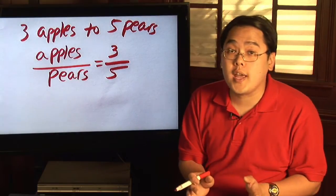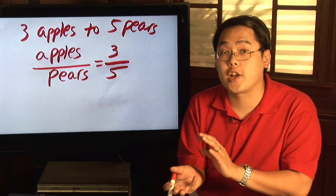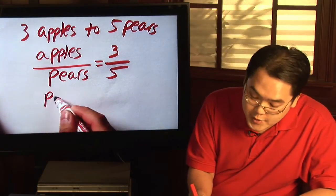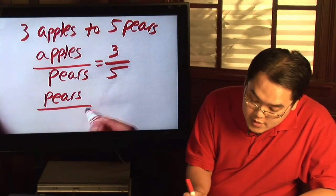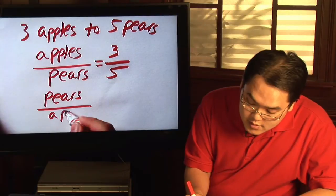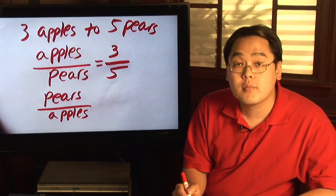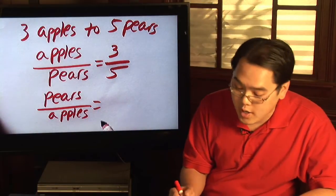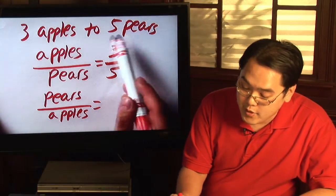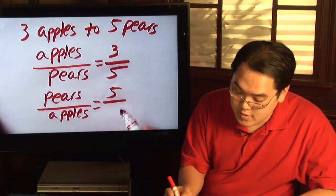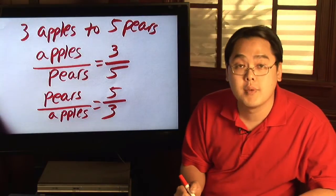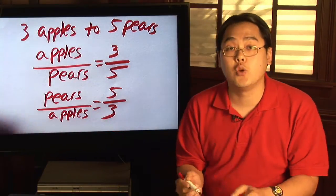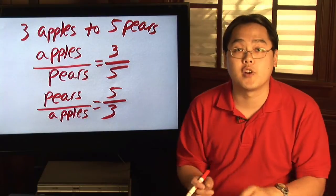On the other hand, you don't have to do it that way. You could go the other way around and make the comparison pears to apples. In that case the numbers get reversed — pears has five and apples is three, so instead of three to five, you'd have five to three, just reversing the variables compared.